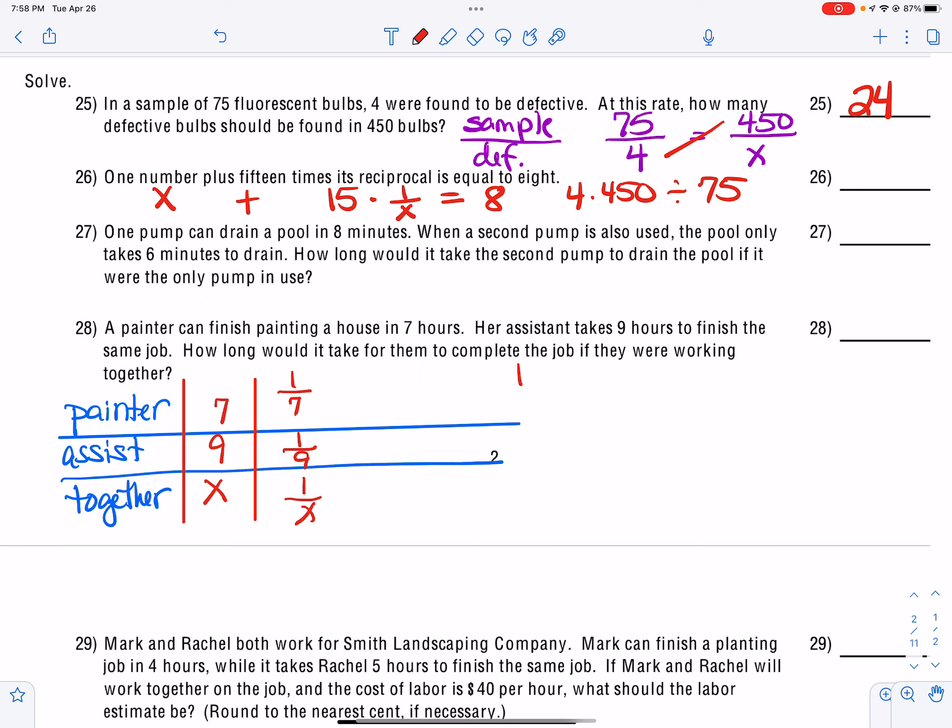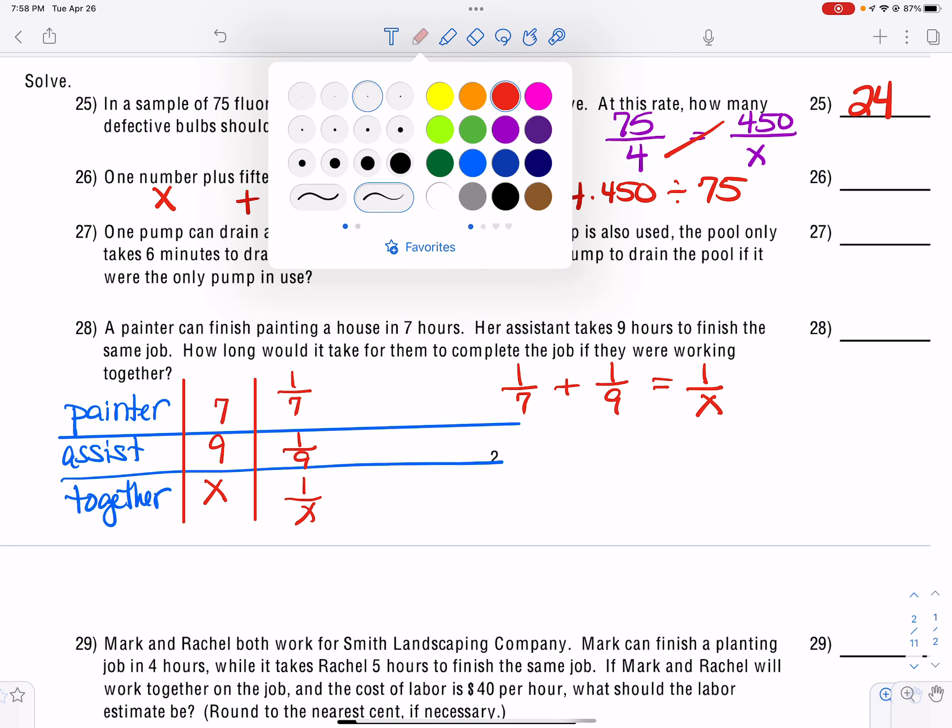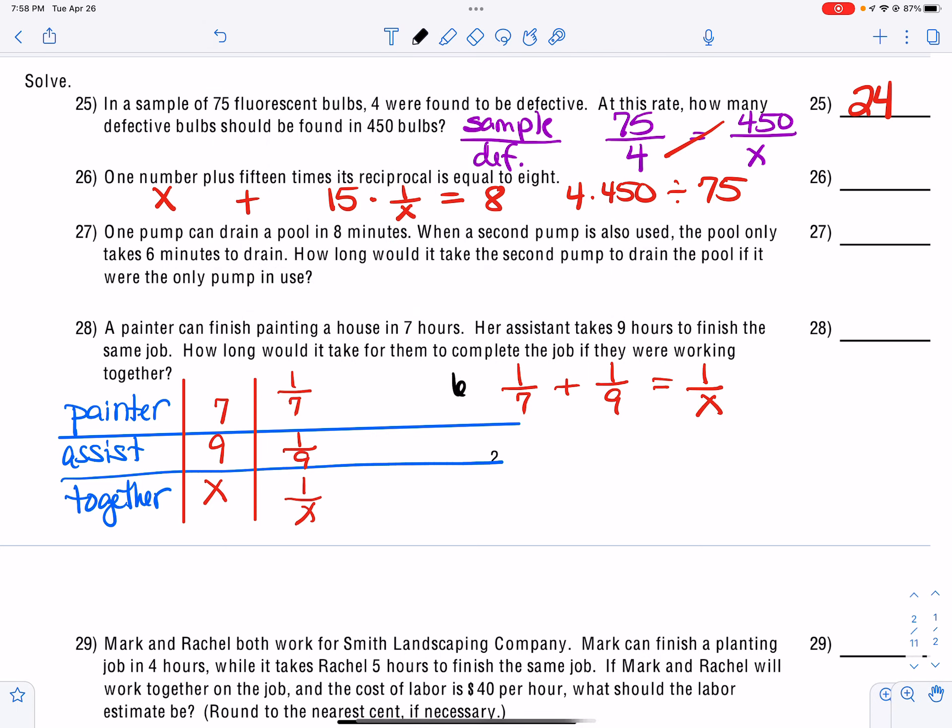And so we are going to have one-seventh plus one-ninth is equal to one over X. And our common denominator is going to be 63X. And so 7 goes into 63 and leaves 9. So we get 9X. Nine goes into 63 and leaves 7. So we get 7X.